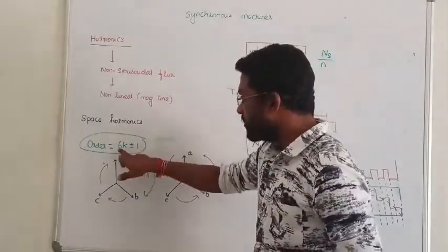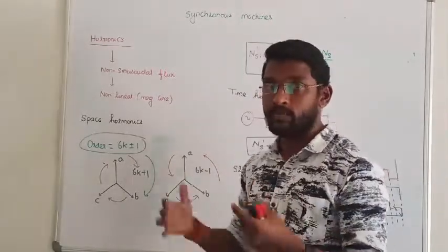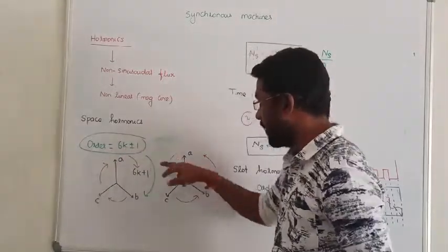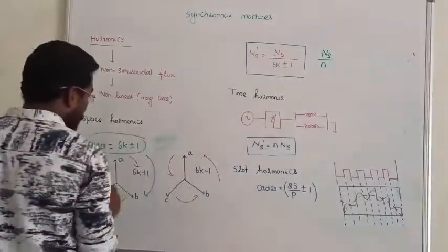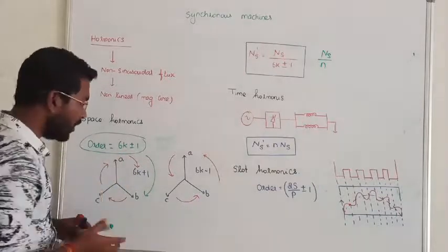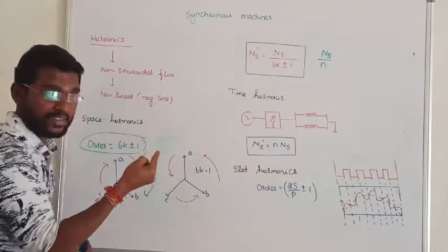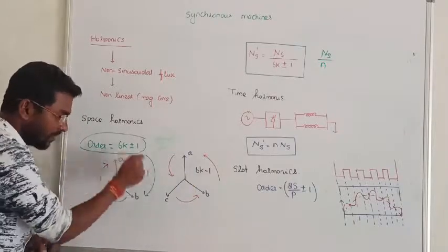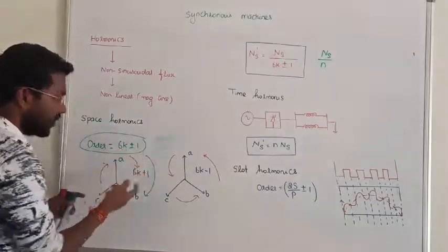If you use the order 6k plus 1, substituting k as 1, 2, 3, 4, 5, 6 — 6k plus 1 gives the positive sequence of harmonics. 6k minus 1 gives the negative sequence of harmonics. That is the difference between positive and negative sequence — it's clear.